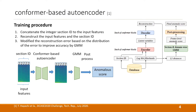We assume that an autoencoder would not be able to accurately reconstruct anomalous data, so we use the conformer as an autoencoder. The training procedure is: first, we concatenate the integer section ID to the input features; second, the autoencoder reconstructs the input features and the section ID; third, we modify the reconstruction error based on the distribution of the error to improve accuracy by GML.